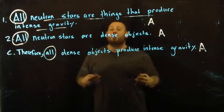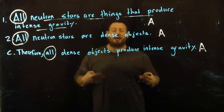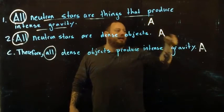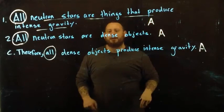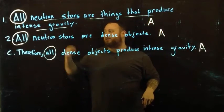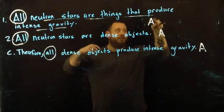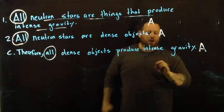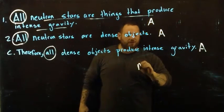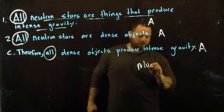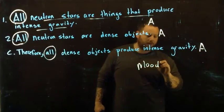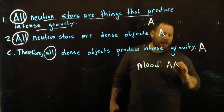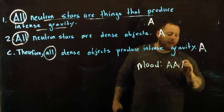This is the mood of the statement. The mood is the three different statement types that we have. We have an A statement, an A statement, and an A statement. So the mood of this argument is A, A, A.